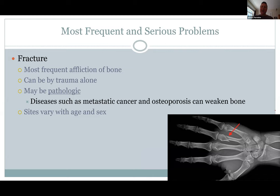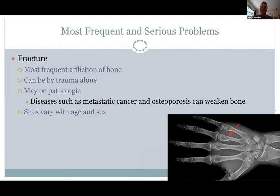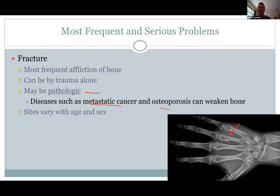Fractures — bone breaks — are very common. Normal breaks obviously have a cause, but you see pathological or spontaneous breaks happen with a simple fall. Then you look at whether it's bone cancer or something weakening the bone, because that normally shouldn't have caused a fracture. We look at bone cancer and osteoporosis. Your fractures depend on age — if you're a kid, it's usually the clavicle or arm. If you're an older woman, it's usually a hip or vertebrae. The wrist is also a common place to break.